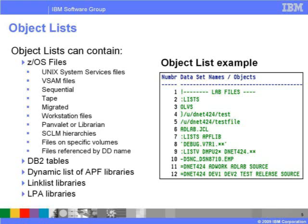An object list can contain many types of entities, such as Unix System Services files, VSAM files, DB2 tables, sequential files, or tape files. It can contain migrated files based on file names or file name patterns. It can also contain SCLM, Panvalet, or Librarian files. Files can be accessed by their DD name references. For example, the command OLD DD ISPPLib will show all files associated with the DD name ISPPLib. Authorized Program Facility files, files located in the link list, and LPA resident programs can also be easily accessed by an ISPF Productivity Tool object list.